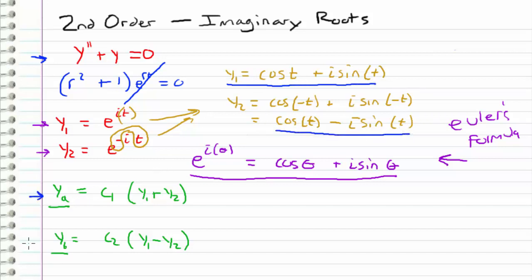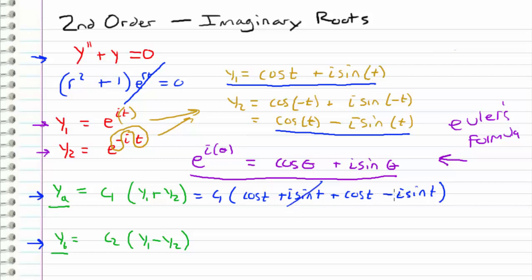Coming back to YA, we have c1 times y1 plus y2, which equals c1 times (cosine t plus i sine t) plus (cosine t minus i sine t). The imaginary parts cancel, and adding the cosine terms gives c1 times 2 cosine t. Since c1 and 2 are both scalars, we absorb the 2 into the constant, leaving YA equals c1 times cosine t.